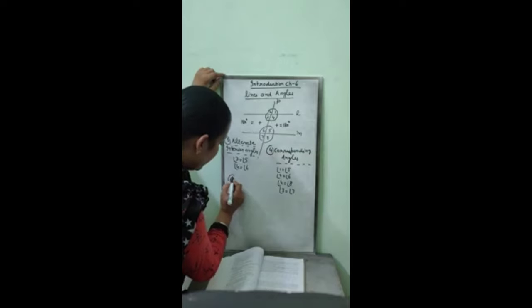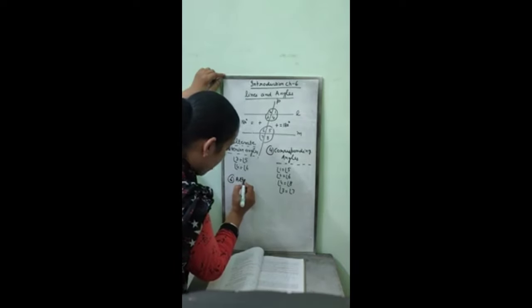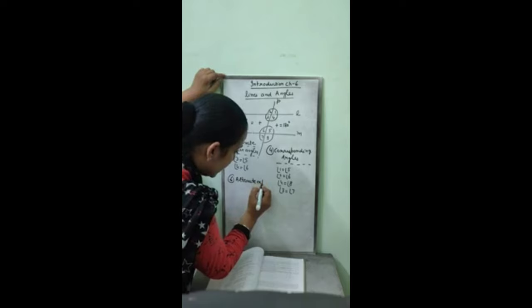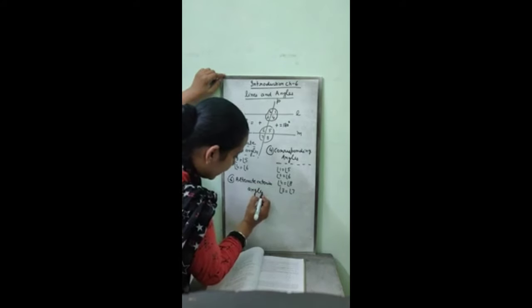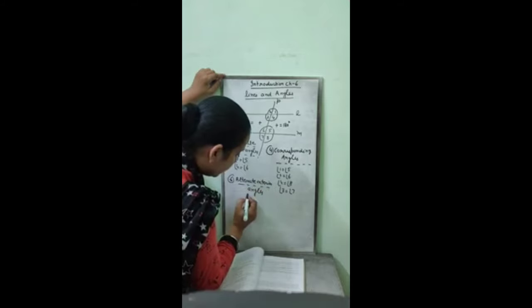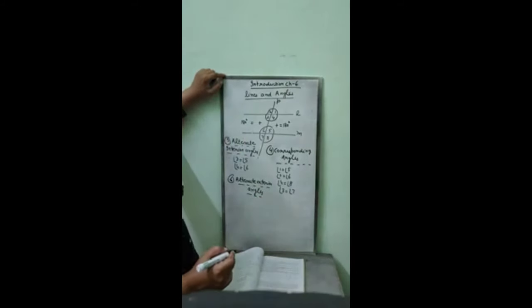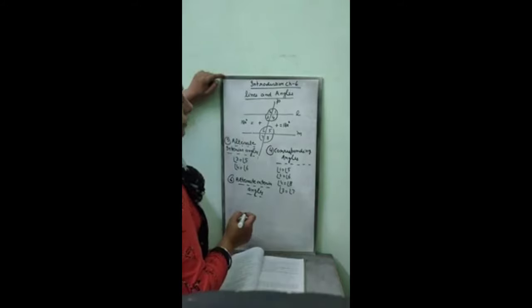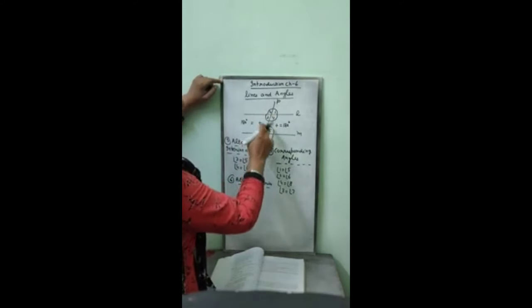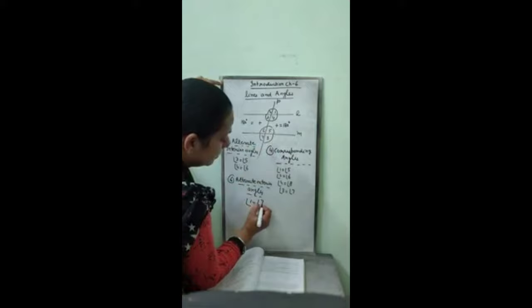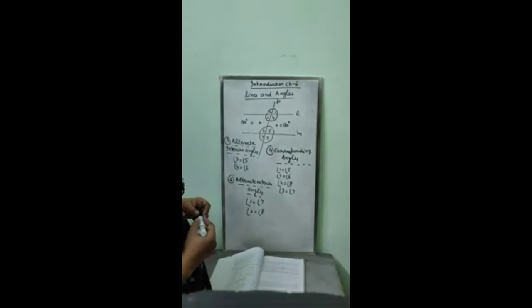Now last relation is alternate exterior angles. Alternate means alternative side. Exterior means outer. This means 1 and 7, 2 and 8. 1 and 7, 2 and 8. This is the relation between parallel lines and the transversal intersecting them. Give a one minute review to these relations thoroughly.